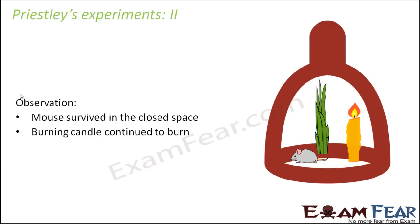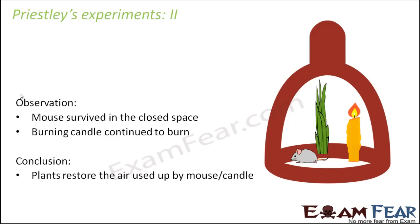His conclusion was that plants restore the air used up by the mouse and the candle. At that time he used the term 'air' because oxygen and carbon dioxide had not yet been discovered. In fact, Priestley himself discovered oxygen during the course of these experiments. What he meant was that plants exchange gases — that is, plants give out oxygen. So this experiment provided the key information that green plants release oxygen.